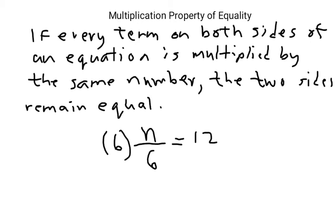So you've copied the equation, n divided by 6 equals 12. Then you apply the multiplication property of equality. Multiply both sides by 6. Over here, that would be 6n over 6. It would be 6n over 6. The 6s would cancel, leaving you n.